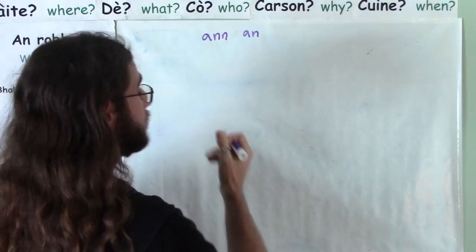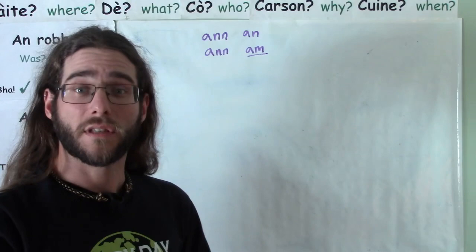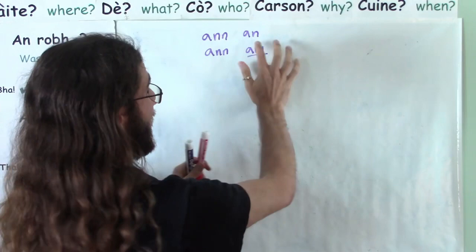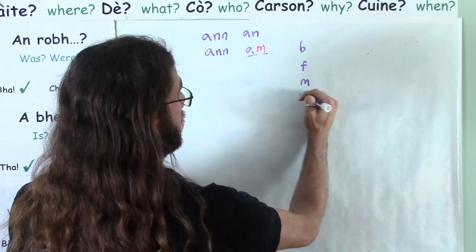But what about am? Why has it changed to am? And there's a simple explanation. An becomes am before words that start with B, F, M, and P.